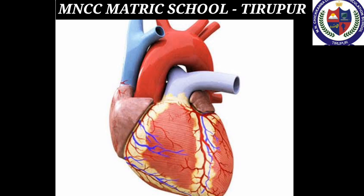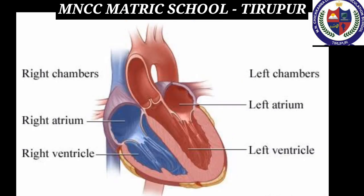The next internal organ is the heart. The heart is a pumping muscular organ, about the size of our own fist. It pumps blood to all parts of the body. It lies between the lungs, almost in the center of the chest, and is fully made up of muscles. The heart beats about 72 times per minute.